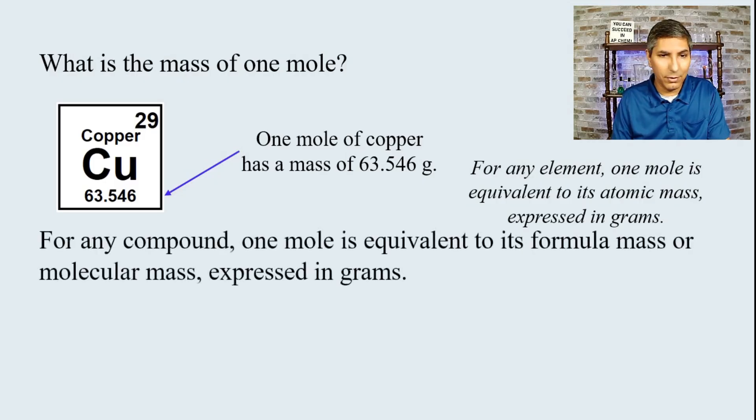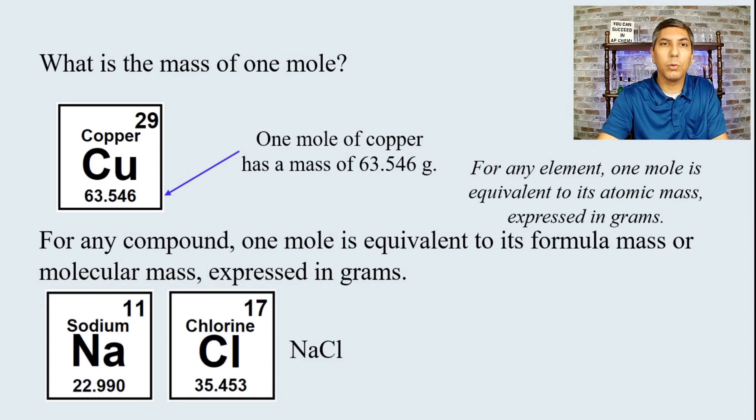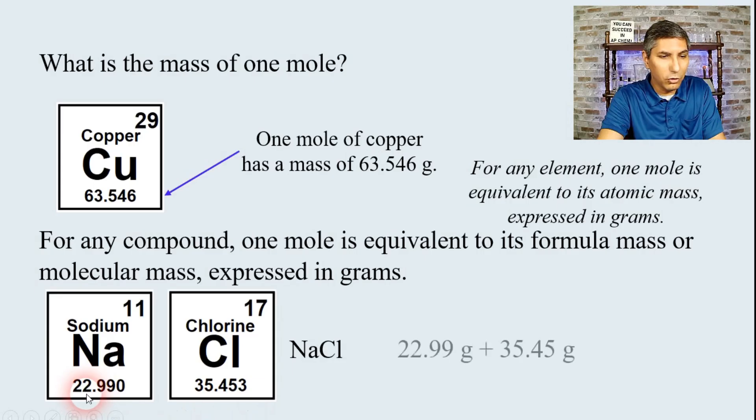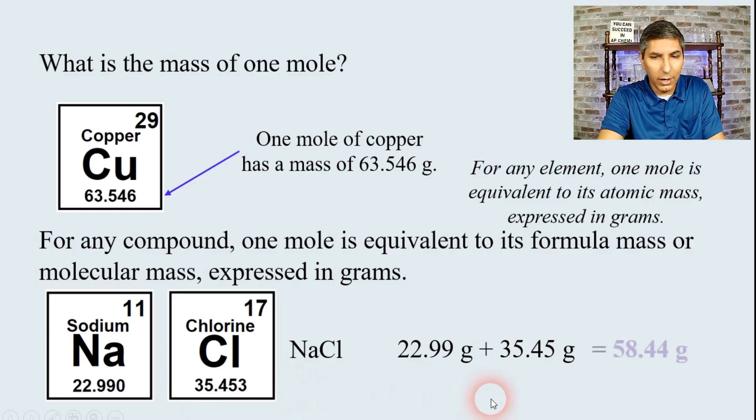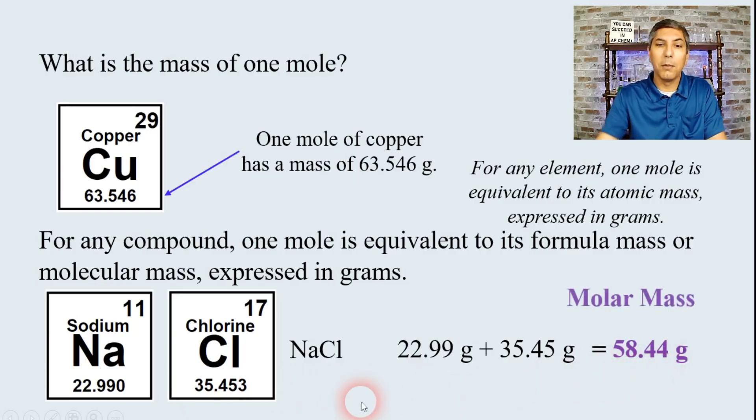If we have a compound, it's pretty much the same thing. We just have to take the sum of those atomic masses. If we have salt, NaCl, sodium chloride, we take the two individual atomic masses of sodium and chloride, and we add them together. So we take 22.99, and we add that to 35.45, and we get a total of about 58.44 grams. And so we call that the molar mass of the substance.